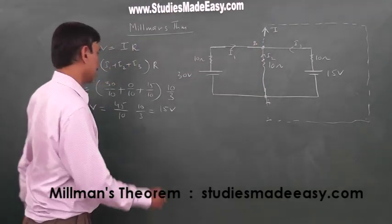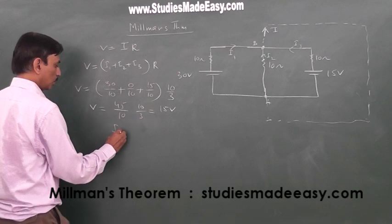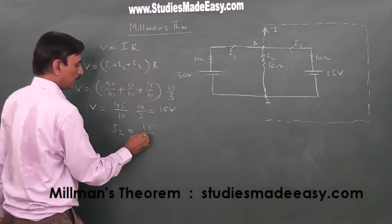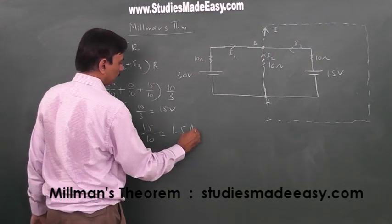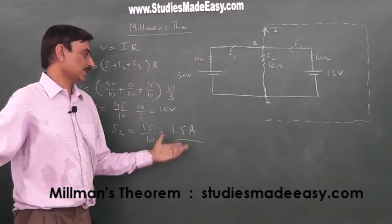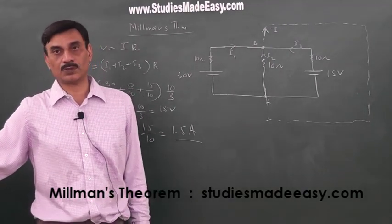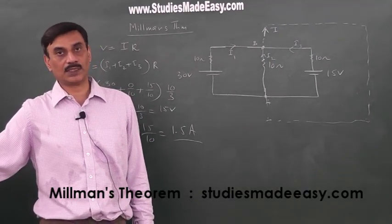That is, I2 has been asked. So, I2 equals V by R, that is, 15 by 10, 1.5 ampere. The same answer which I got using Kirchhoff's laws, superposition theorem, node analysis method.